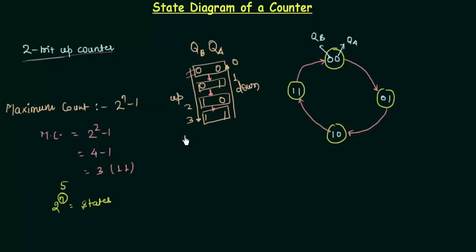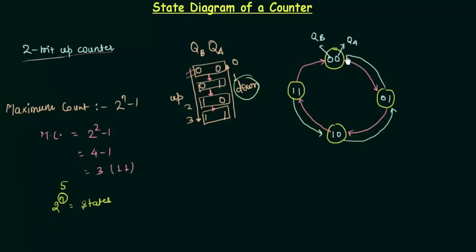Now for the down counter, the states remain the same — only the transitions change. You start from 1 1, go to 1 0, then 0 1, then 0 0, and finally back to 1 1. This is for the down counter, and the previous one was for the up counter.